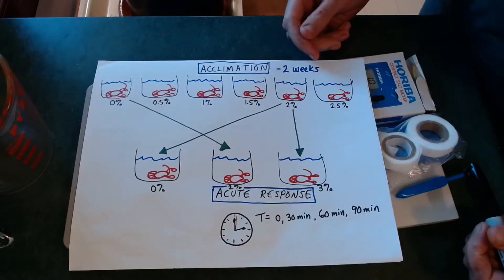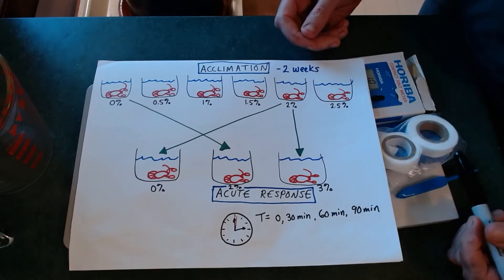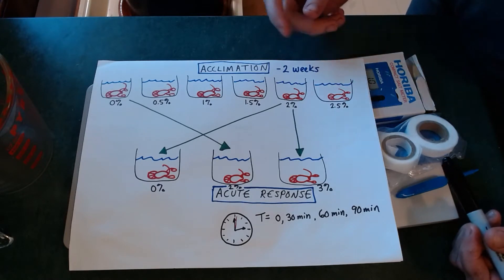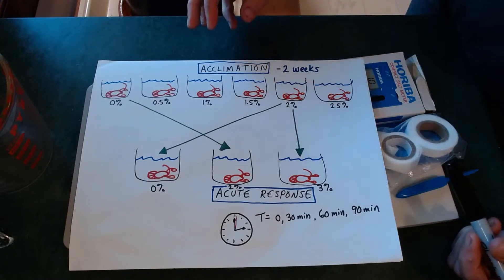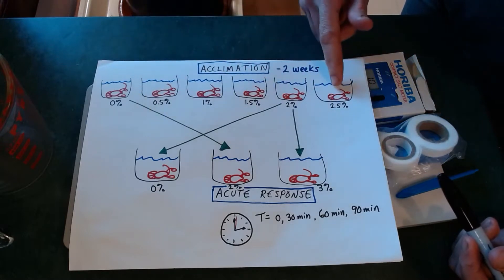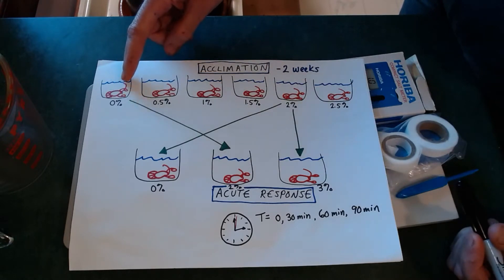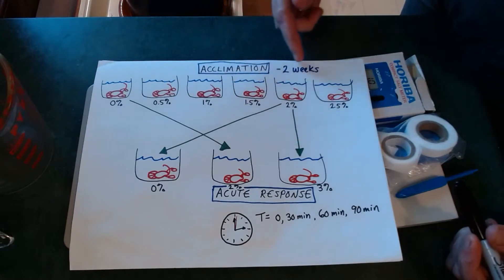Okay so from the lab handout hopefully you've gathered that the purpose of this lab is to examine both acclimation and acute responses of crayfish to environments that vary in their salinity. So the original goal of this experiment was to first take a bunch of crayfish and then acclimate them to salinities that range from zero percent up to two and a half percent. And then we're going to take water samples and measure the salt levels both in the water sample and in the crayfish itself at each of these different acclimation conditions.